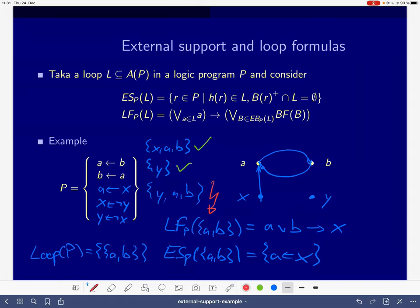So this is more or less the way loop formulas provide a sort of, I mentioned, a litmus test for stable modelhood. They allow us to tell whether a supported model is stable or not.